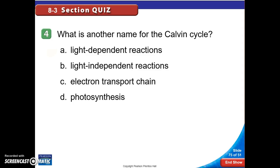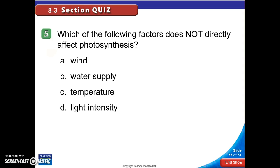Another name for the Calvin cycle is... you should be choosing B. Which of the following factors does not directly affect photosynthesis? We're going to have to pick A for that one because wind doesn't really affect it directly. It's not a part of photosynthesis, but we know that water is required. We know that temperature is always going to affect how proteins and enzymes work, so how well the reactions work is going to be affected by temperature, and how much light you have is obviously going to affect your photosynthesis. That's it. Hopefully this will help you guys be prepared for your quiz and understand your Chapter 8.